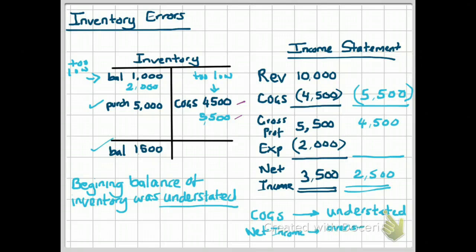Your net income and gross profit was overstated — by the amount of the error, which in this case was $1,000. So if you're given a question about inventory errors in your quizzes or tests, recreate an inventory account and prepare a fake income statement so you can work out the effect of the error. Another option is to memorize the chart in your PowerPoint, but if you know how to work out the effect of an inventory error, you will never get those questions wrong.